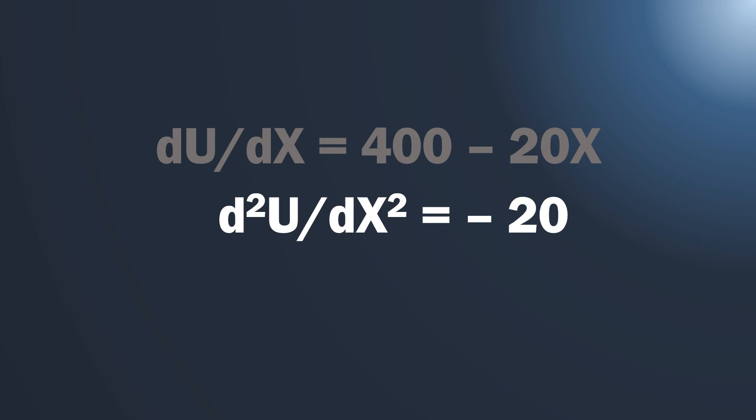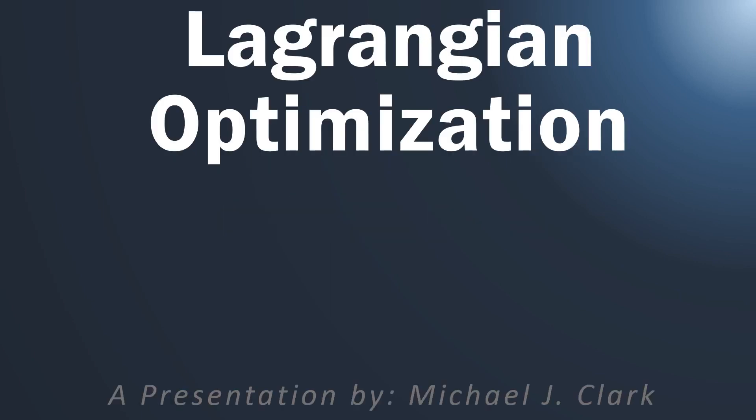We've double-checked that we have this maximal point. The key to the Lagrangian approach is really going to be that first derivative — but keep in mind this second derivative check. This video has shown us unconstrained optimization — we solved for the optimal amount of x given our preferences. Now we want to look at a utility function and optimize it given some constraints, so we're going to turn to constrained optimization.